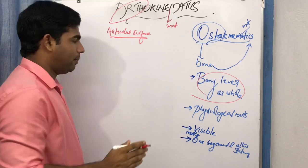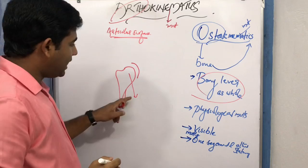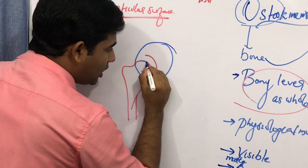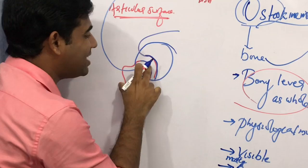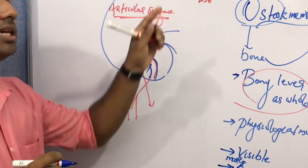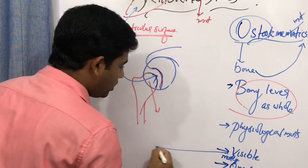For example, in the acetabulum and femoral head: when the femur goes into flexion, that motion as a whole is osteokinematic. But inside the joint, between the articular surface of the femoral head and the acetabulum, movements occur — those are known as arthrokinematic movements. These are movements happening inside the joint at the articular surface.